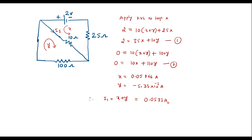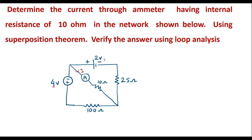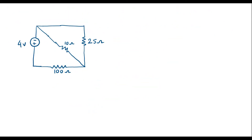So this is part of the current. Now we will consider the 4 volt source alone. In that case the 2 volt source will be short circuited. Let me redraw the circuit — this is the equivalent circuit. I will now assume the current through this branch to be I2.